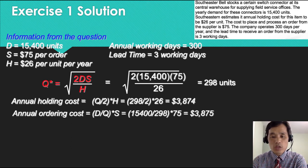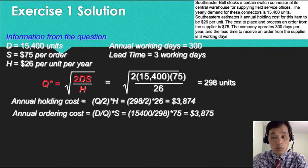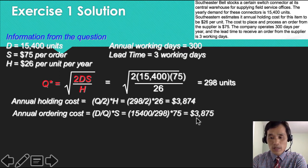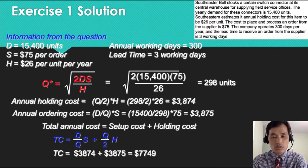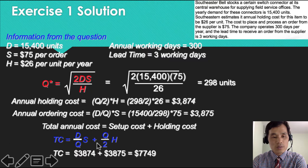Please remember that EOQ is the point where holding costs and ordering costs intersect. Therefore, the answer for ordering costs should be the same or similar. Total cost is 3875. The total cost is simply the addition of holding costs to ordering costs. So TC equals D over Q times S plus Q over 2 times H. Sum these two costs up, then you have $7,749.